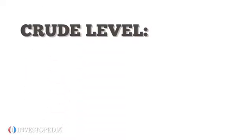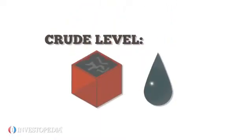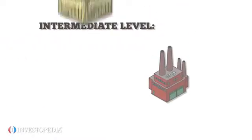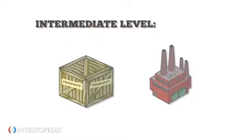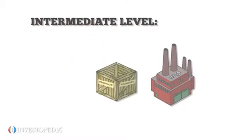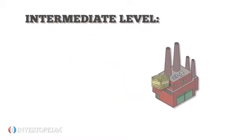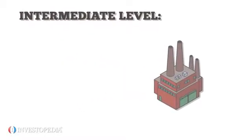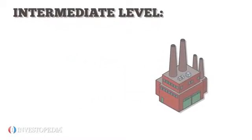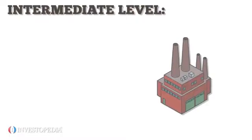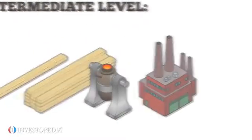The crude level reflects the average price change from the previous month for commodities such as coal and oil. At the intermediate level, goods have been manufactured to some extent and then sold to other manufacturers to create a finished good. Examples include lumber and steel.